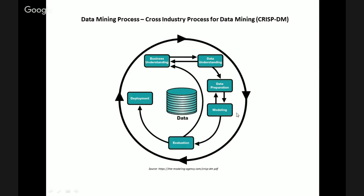In the fourth stage of the CRISP-DM model, we now encounter modeling. This is the primary stage where the data mining technologies we will be covering in these videos are applied to the data, with the output hopefully being some sort of model or pattern. But it's really important to note that not all patterns are valid, and we'll discuss that more in the evaluation stage.